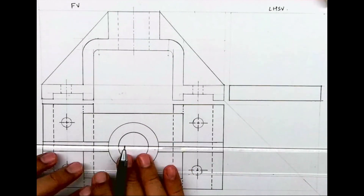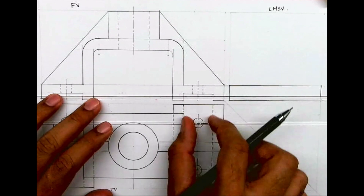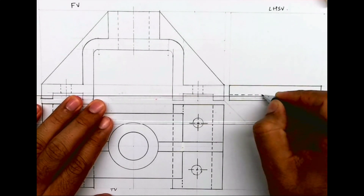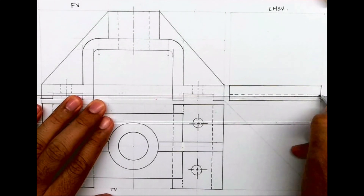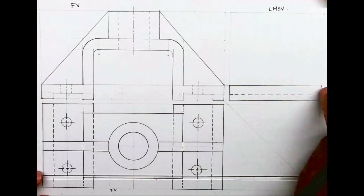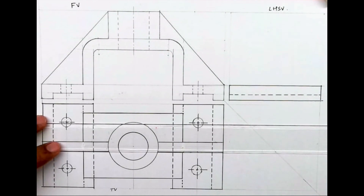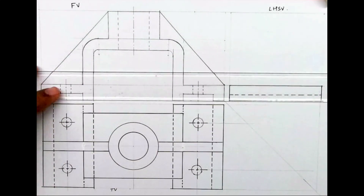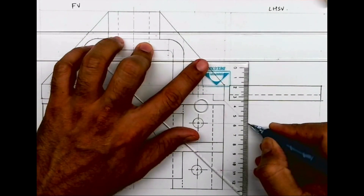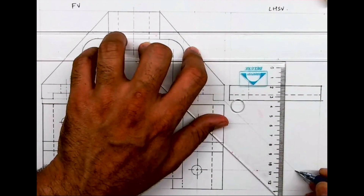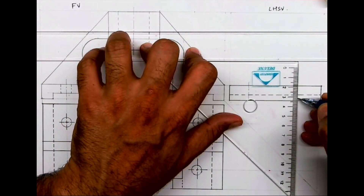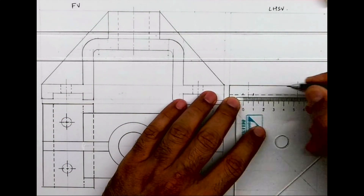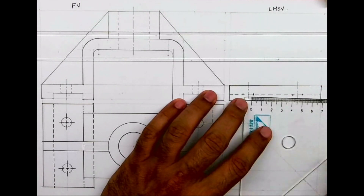This edge is through and through, so we'll show it as dotted inside. Similarly, these two circles will be shown as dotted lines and will project accordingly. From here we'll draw a vertical line as an axis. This is diameter 10, so 5mm on both sides — a circle in one view, and the other two views will show it the same way.